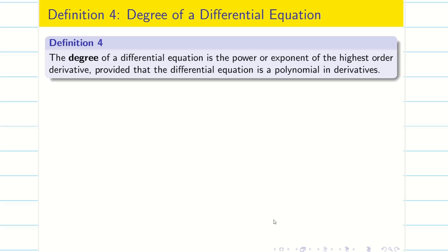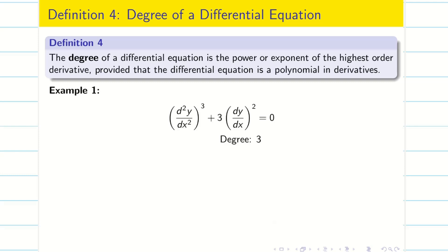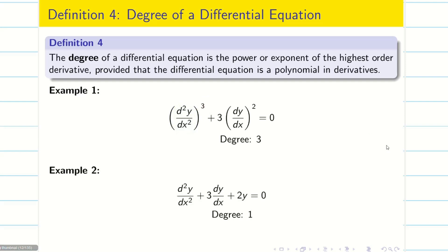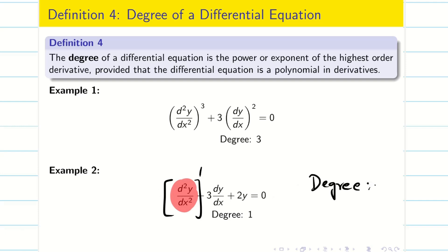Next, the degree of a differential equation. The degree of a differential equation is the power of the highest derivative. For example, if the highest derivative is d²y/dx² and the power of that highest derivative is 3, then we say the degree is 3. Similarly, if the highest derivative is d²y/dx² but the power is 1, then the degree is 1.